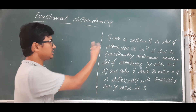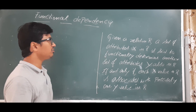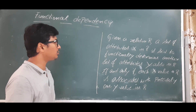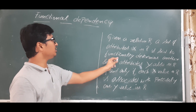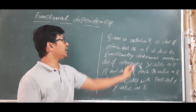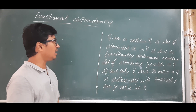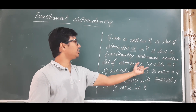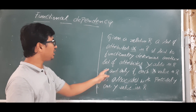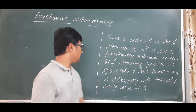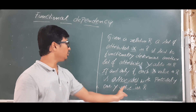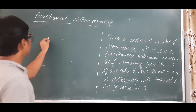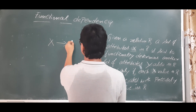A relation R means a table whose name is R. A set of attributes X — which can be a single attribute or more than one attribute in relation R — is said to be functionally determined by another set of attributes Y, also in relation R, if and only if each X value in R is associated with only one Y value in R.